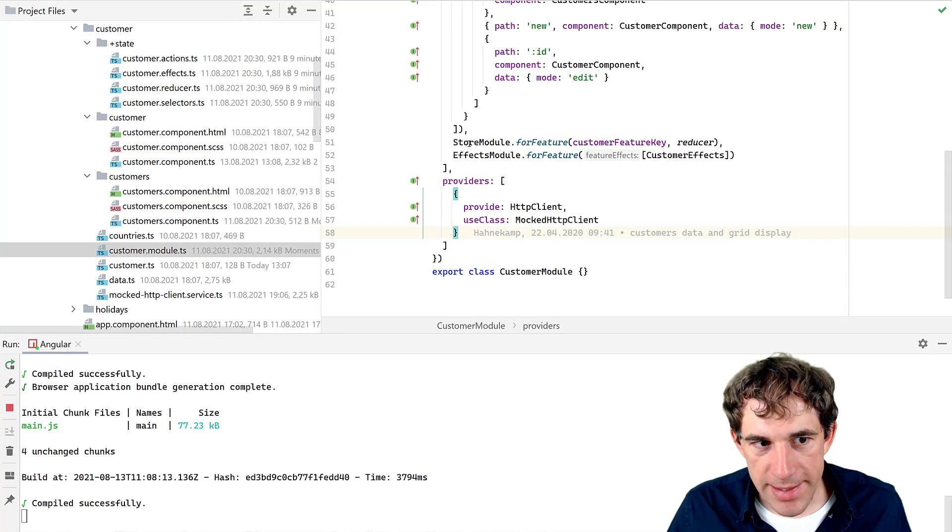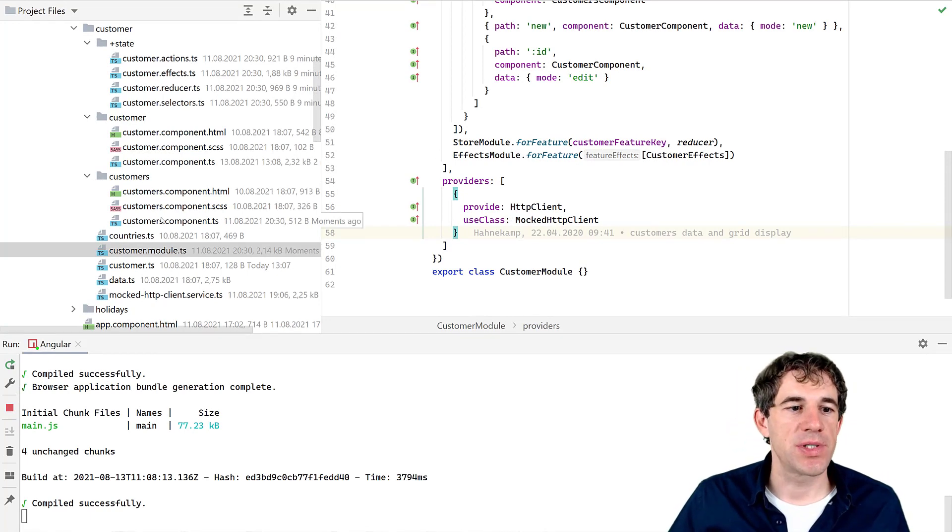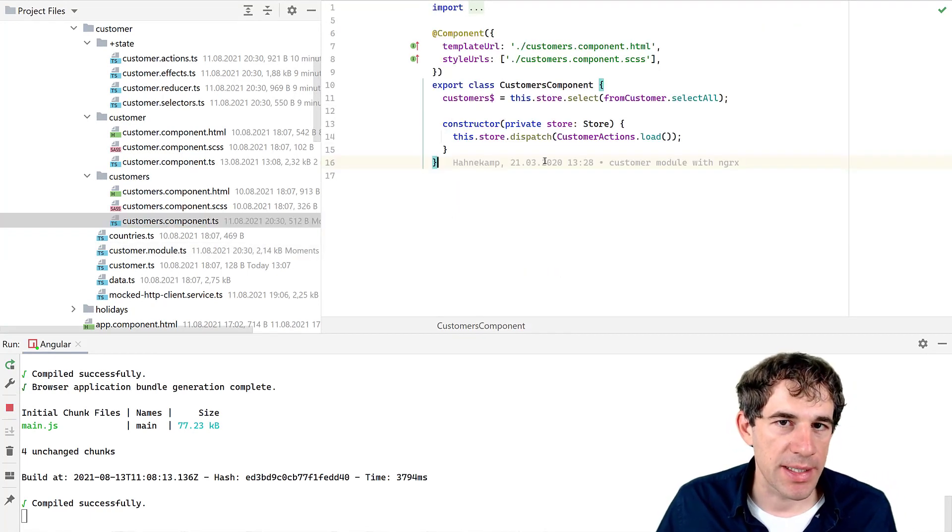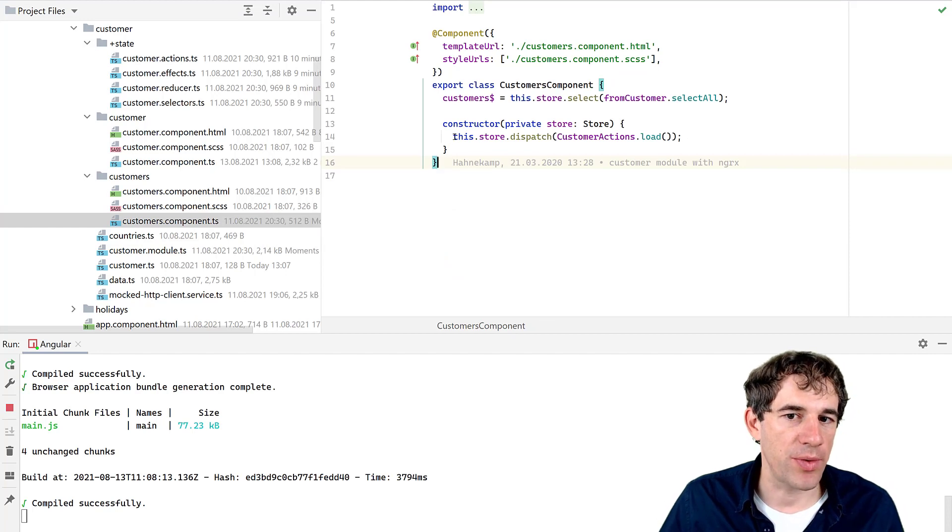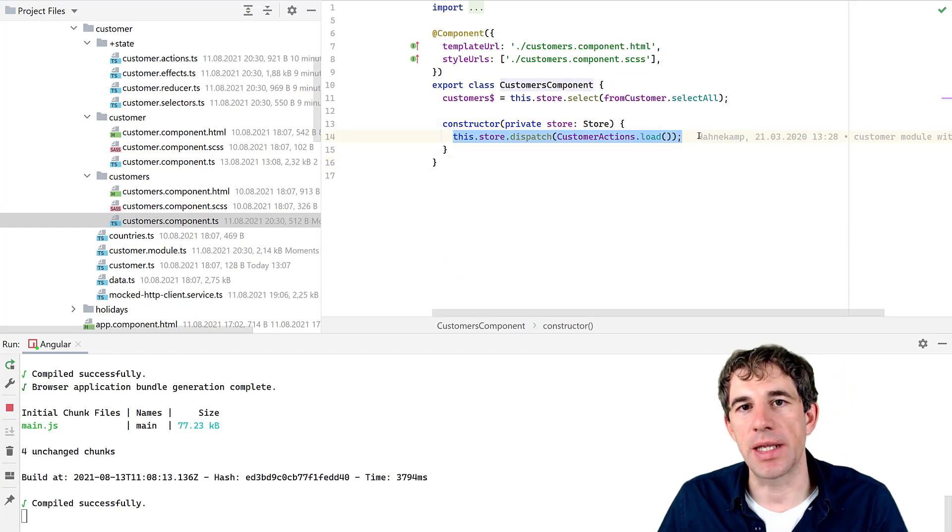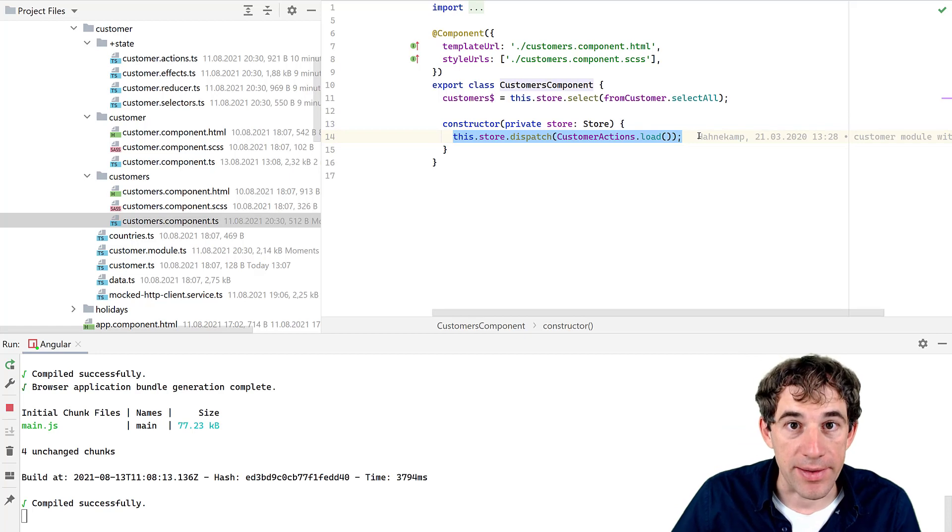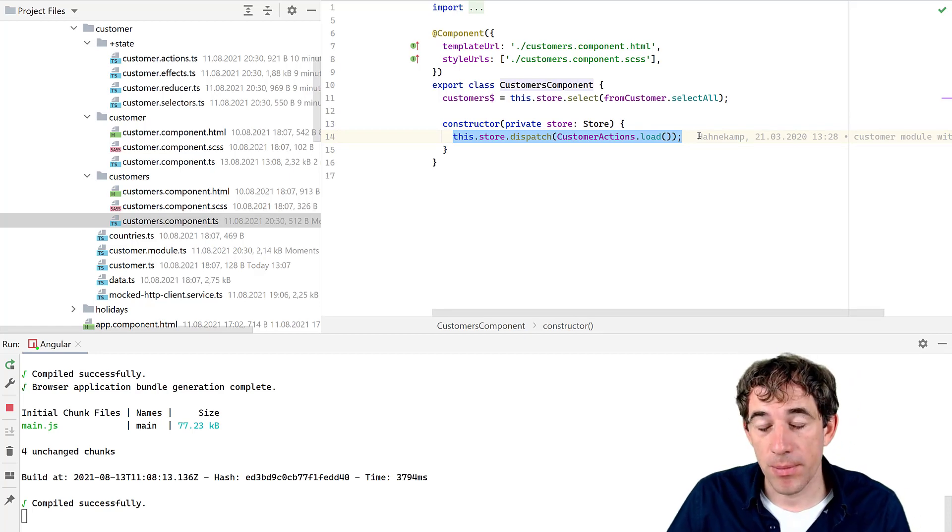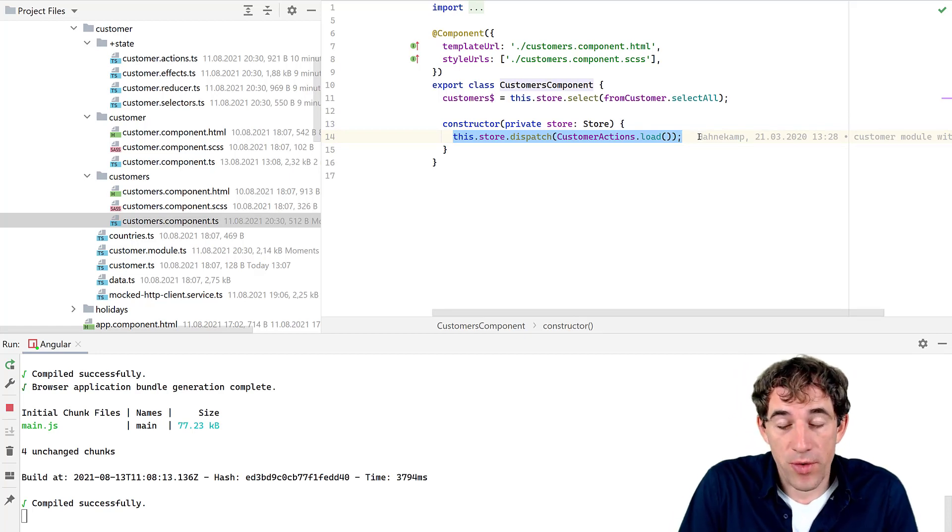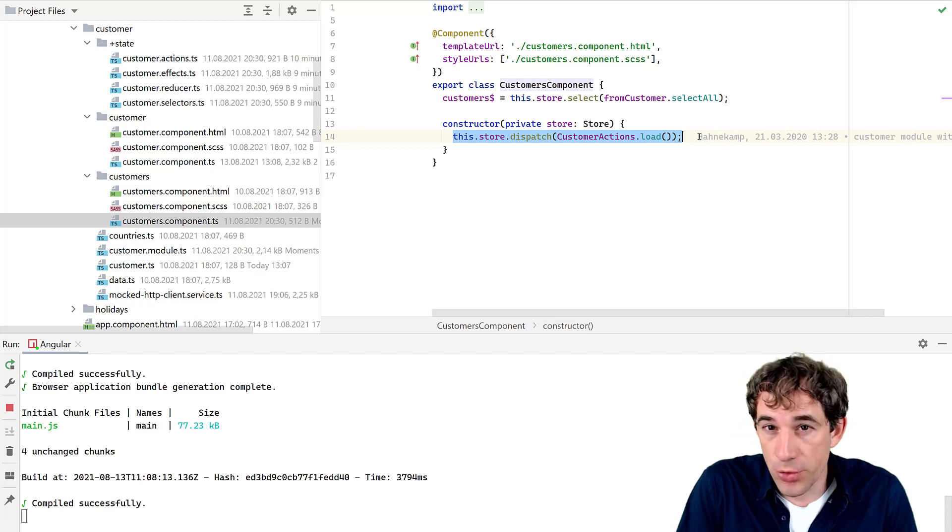So a quick outlook for the next episode. As we see in our customers component, every time this component renders, it is reloading the data from the backend. And this is a problem because the data can already be in the state. So there is no real need to reload it. And we will see how this can be solved in the next episode.